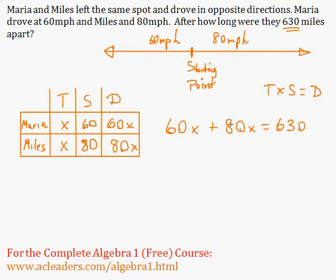So 60x plus 80x is 140x. And that's 630. So let's just divide both sides by 140. And that is 4.5.